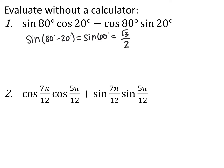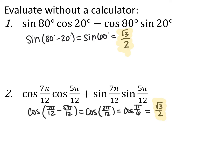For the second reverse example: cosine of 7π/12 times cosine of 5π/12 plus sine of 7π/12 times sine of 5π/12. The same trig function (cosine) appears throughout, and cosine uses the opposite sign — so this is a cosine difference formula. That gives cosine of 7π/12 minus 5π/12, which is cosine of 2π/12, which is cosine of π/6, which equals √3/2. So these formulas work in either direction.